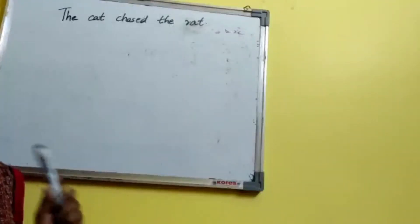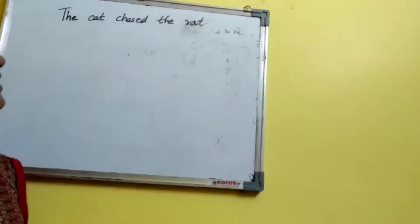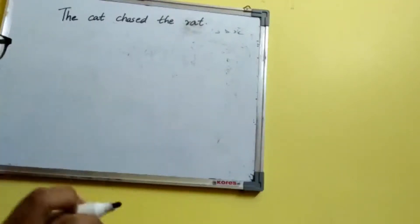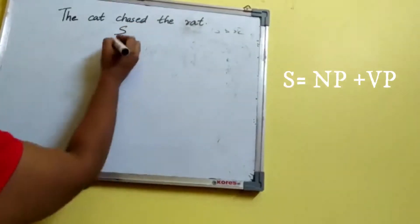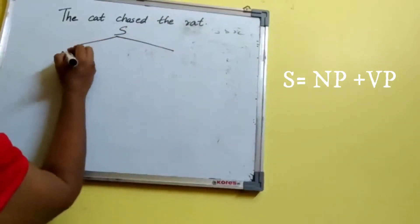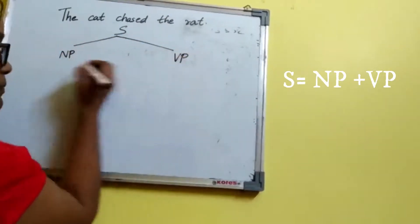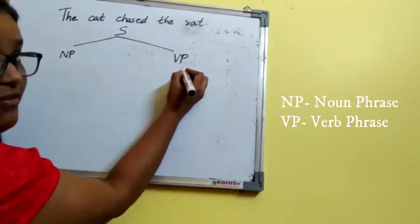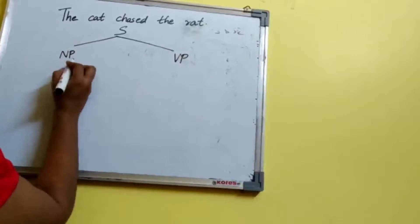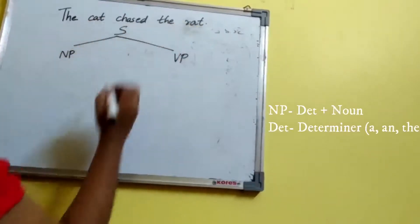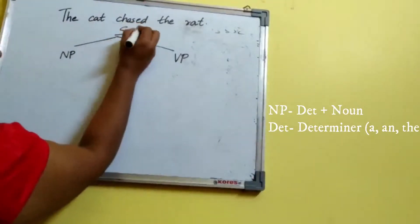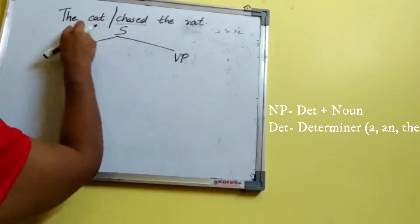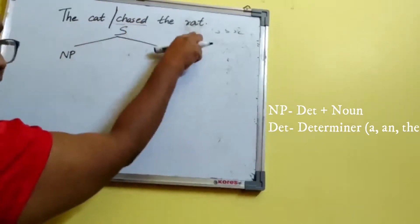So let's do the immediate constituent analysis of this simple sentence: 'The cat chased the rat.' We are doing IC analysis in the tree diagram method. S is equal to NP plus VP — NP being noun phrase and VP being verb phrase. The verb of the sentence is 'chased', so we cut it there. 'The cat' is the noun phrase and 'chased the rat' is the verb phrase.